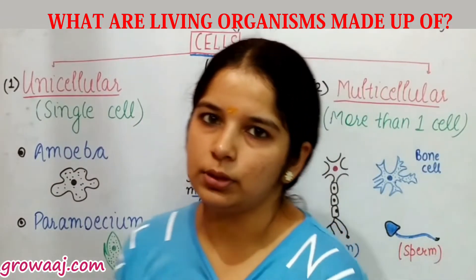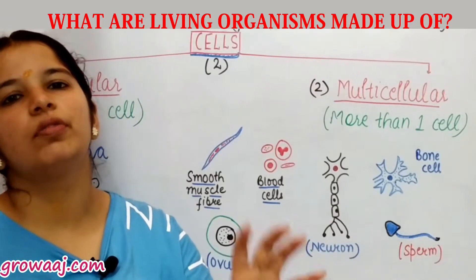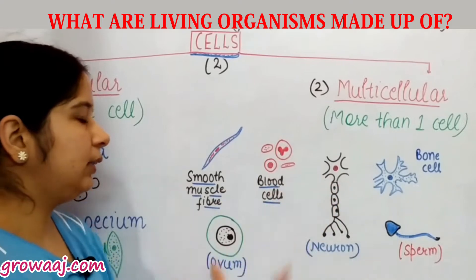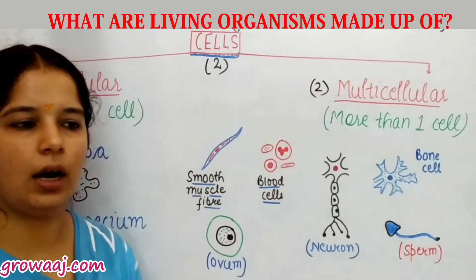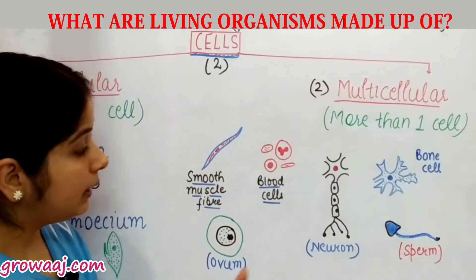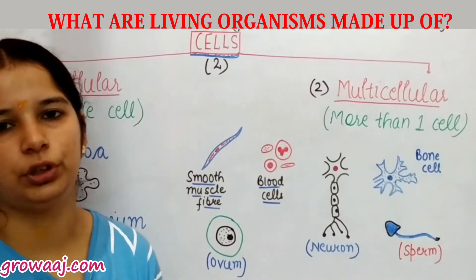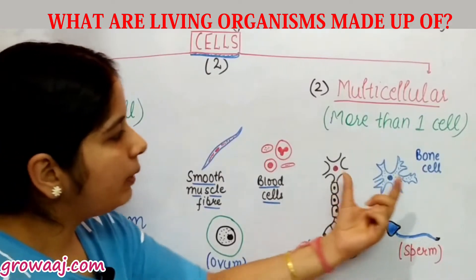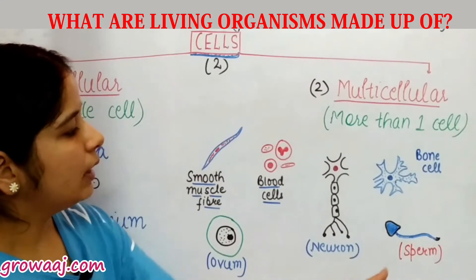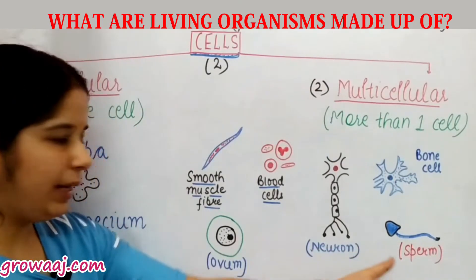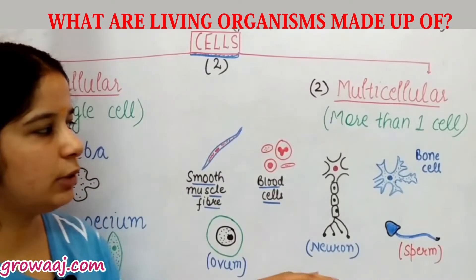Now let's discuss multicellular organisms. Taking the example of the human body — the human body is made up of different kinds of cells, and these different cells perform different functions. Some cell types include: smooth muscle fiber, which is a type of cell; blood cells, which include red blood cells and white blood cells; neurons, which are part of the nervous system and regulate the central nervous system; bone cells known as osteocytes; sperm, which are male reproductive cells; and ovum, which is the female reproductive cell.